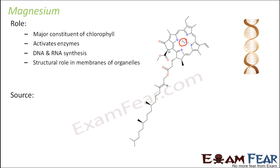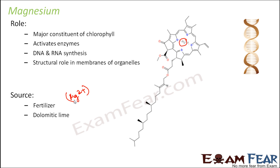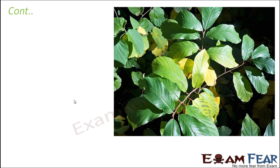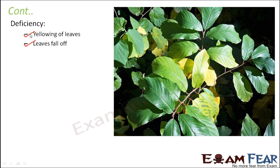Magnesium is absorbed as the ion Mg2+. It can be obtained from fertilizers, dolomitic lime — which contains both calcium and magnesium — and other organic materials. Scarcity of magnesium causes yellowing of leaves or early leaf fall. Frequent loss of leaves is harmful because without leaves, the sites for photosynthesis are missing, making it difficult to carry out photosynthesis, without which nothing can happen to the plant.